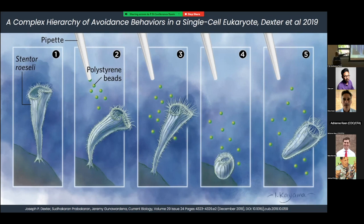Statistical analysis showed there's actually a 50-50 chance of Stentor Roselli taking one of the last two behaviors. Being unpredictable in your environment can be useful. This clearly showed that this single-celled organism is capable of making decisions based on past experience — a simple form of learning.